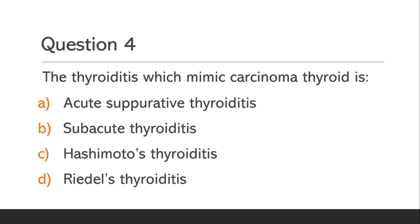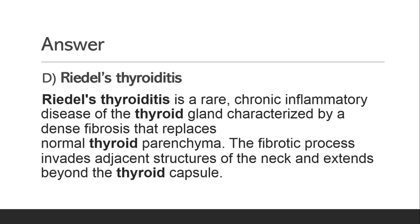Question 4. The thyroiditis which mimics carcinoma thyroid is: Option A, Acute suppurative thyroiditis; Option B, Subacute thyroiditis; Option C, Hashimoto's thyroiditis; Option D, Riedel's thyroiditis. The answer is Option D, Riedel's thyroiditis.